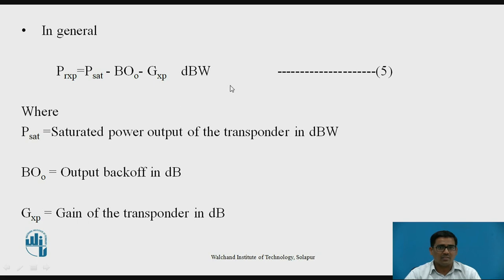In general the received power P_Rxp = P_sat - BO_0 - G_xp. The unit is dBW. Where P_sat is saturated power output of the transponder in dBW. BO_0 is the output backup in dB. G_xp is gain of the transponder in dB.